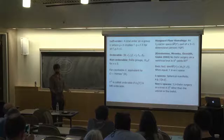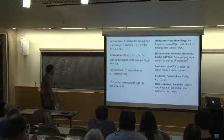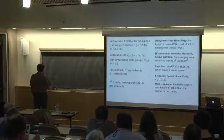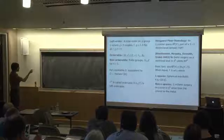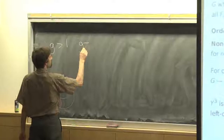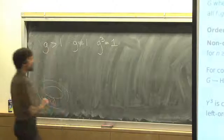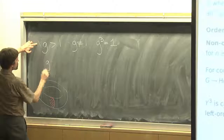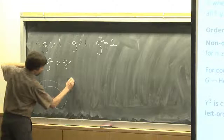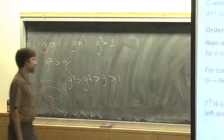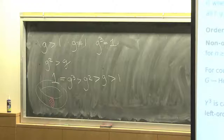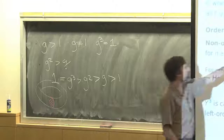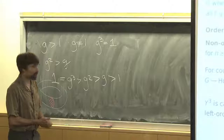What are some groups which are not orderable? Finite groups are not orderable — torsion causes problems. Let's say I had an element of order three, and G is bigger than one. If G is not the identity but its cube is the identity, then by left invariance G squared is bigger than G, and G cubed is bigger than G squared. But G cubed, which I said is one, is bigger than one — violating the order. So any group with torsion is not left-orderable.